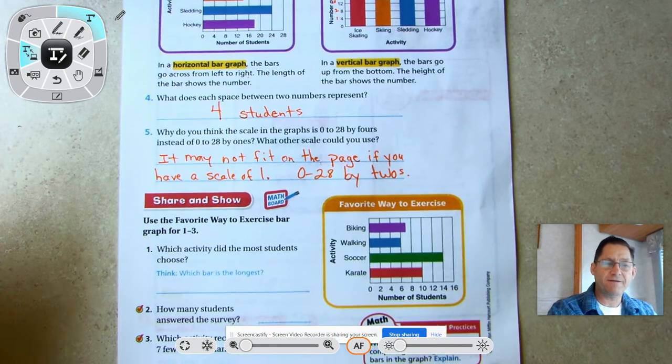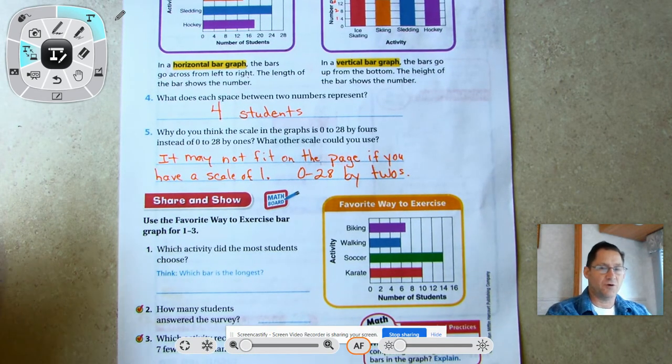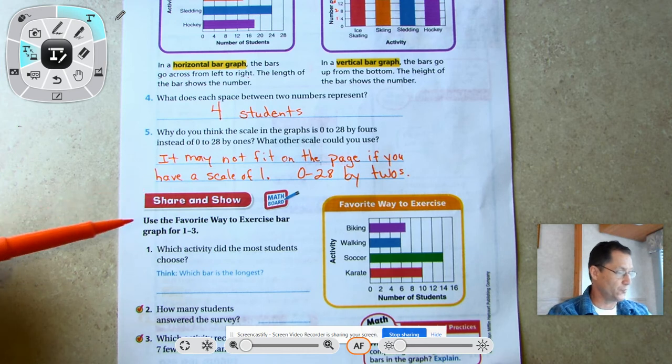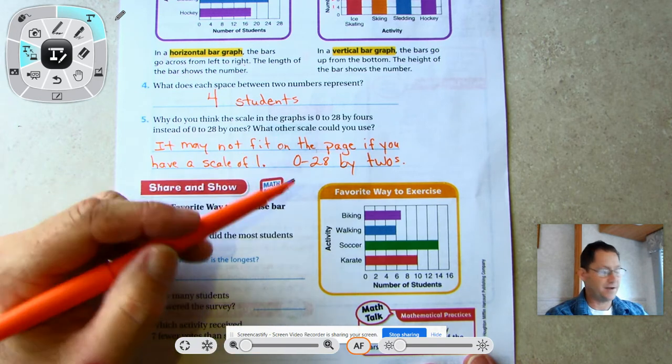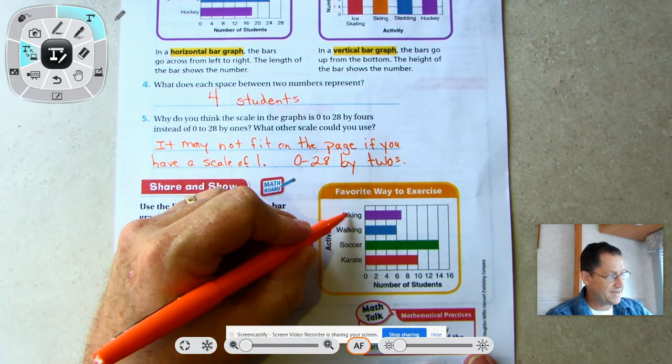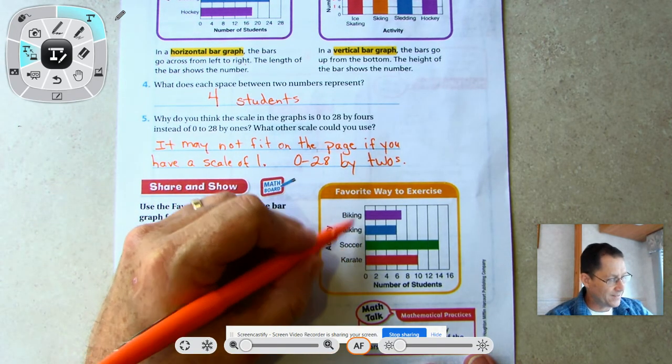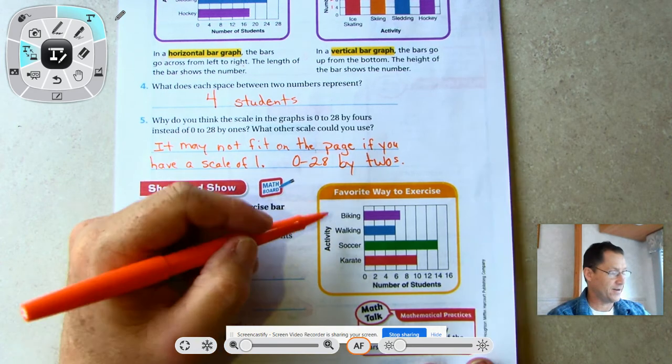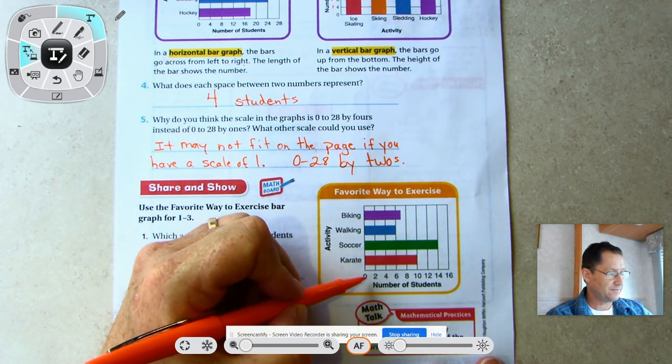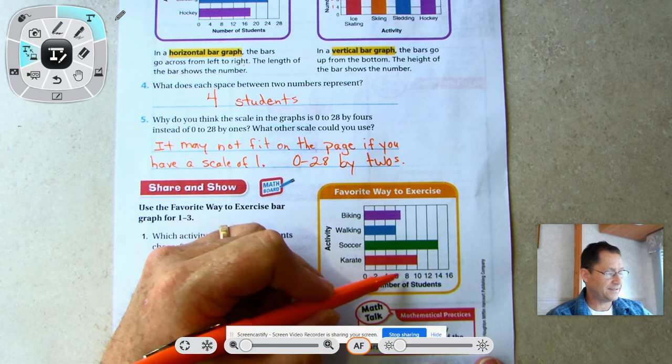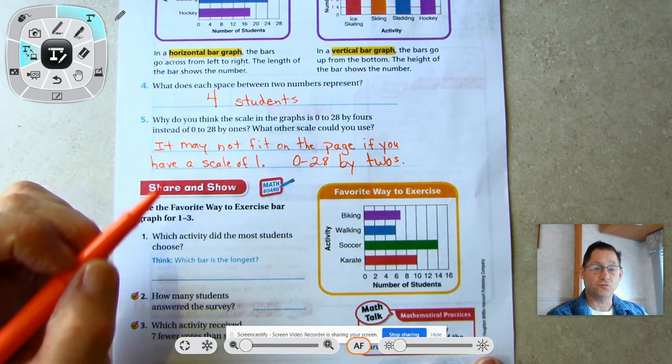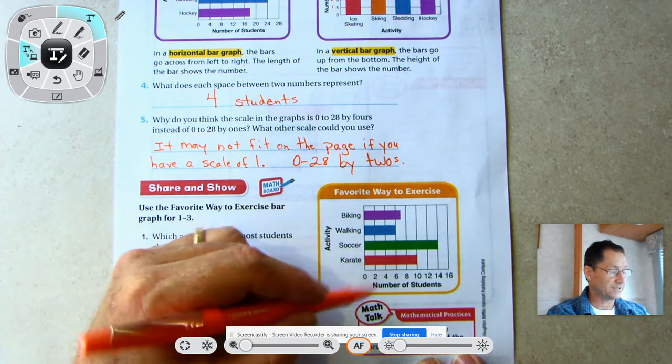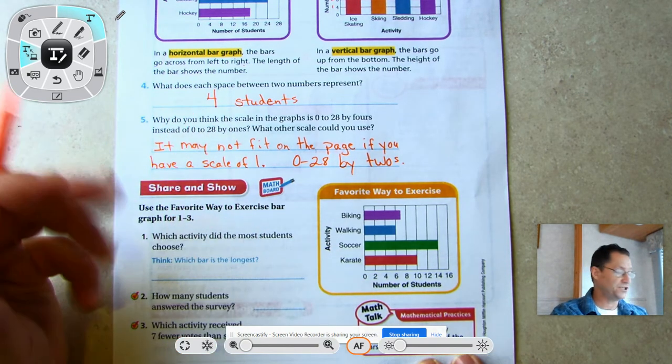Share and show - use the favorite way to exercise bar graph for numbers one through three. We have a title 'Favorite Way to Exercise' that tells us what the graph is about. We have biking, walking, soccer, and karate - those are the activities being counted. It goes 0, 2, 4, 6, 8, 10, 12, 14, 16 - zero to sixteen by twos, so our scale or interval is two.